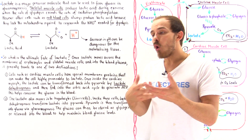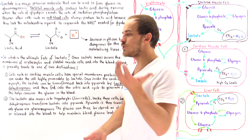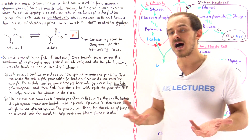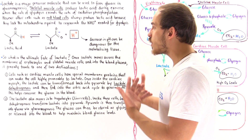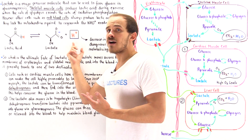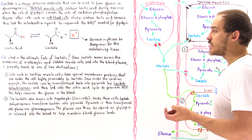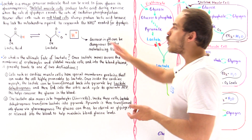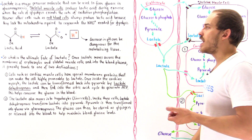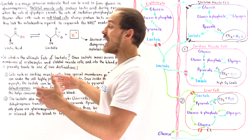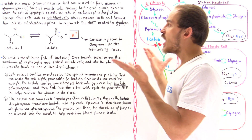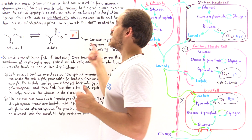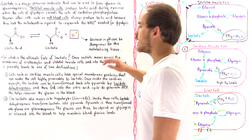Why is H+ buildup dangerous? Because all different types of structures — proteins, nucleic acids, and DNA molecules — are held together by ionic bonds. These bonds can be disrupted by the increase in H+ ion concentration. So our cells actually have mechanisms that turn off glycolysis when there is too much buildup of H+ ions in our blood. That's exactly why eventually, as we're sprinting, we have to stop — because glycolysis is shut down as a result of H+ acting as an allosteric inhibitor to specific enzymes of glycolysis.